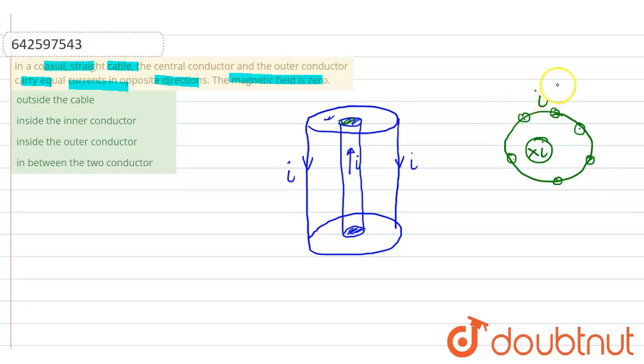Now I am going to form an Ampere's loop which is outside the loop. This is Ampere's loop. And as we know that Ampere's loop should have some direction. I am imagining the direction of the Ampere's loop.